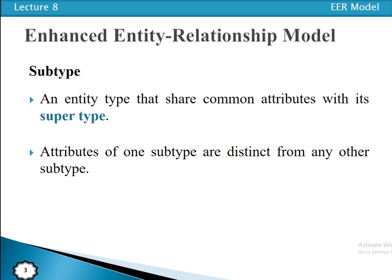What is a sub type? An entity type that shares common attributes with its super type is called a sub type. Each sub type inherits attributes from its super type, and in addition it may have special attributes. The attributes of one sub type may be distinct from any other sub type. So the sub type inherits attributes from its super type, and its attributes are distinct from those of any other sub type.